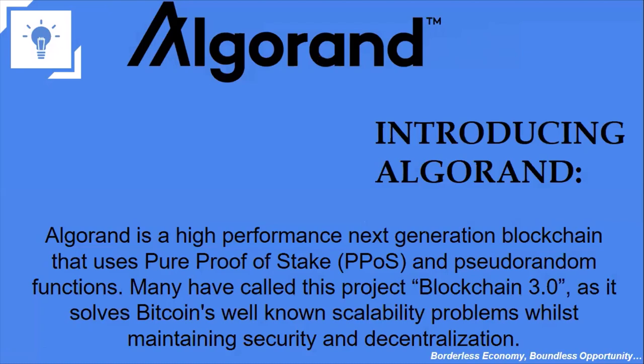What is Algorand? Algorand is a blockchain platform — a high-performance, next-generation blockchain that uses pure proof of stake and a verifiable random function. Many of us are familiar with proof of stake, but you may wonder why we have 'pure' here. In Algorand's blockchain, as a miner staking your token to participate in the ecosystem, you can easily pull off your token at any time that you want.